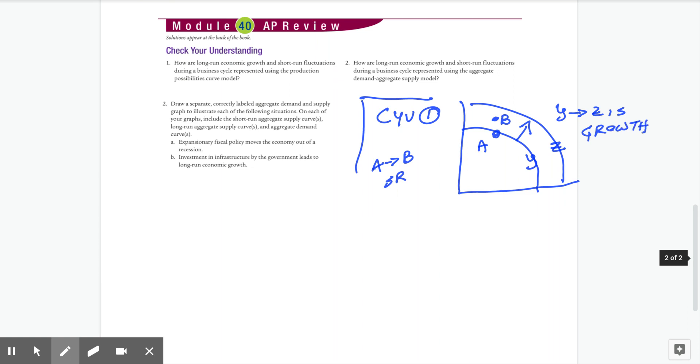Now question number two says, how are long run economic growth and short run fluctuations of business cycle represented using ADAS? And like the lecture that I did on this as well, we would say that if you shift LRAS to the right, that's growth. So YF1 to YF2, that's growth. But we would say that if you just had a short run increase in aggregate demand, or it even could be a short run increase in just aggregate supply, if it was temporary, this is not growth. And so let me answer this question directly. This is the short run fluctuation.